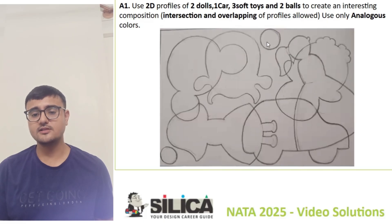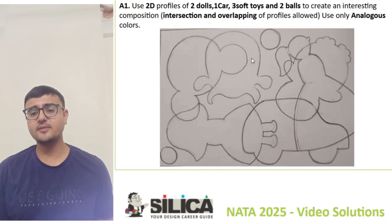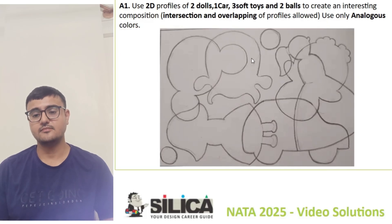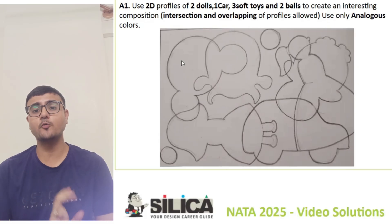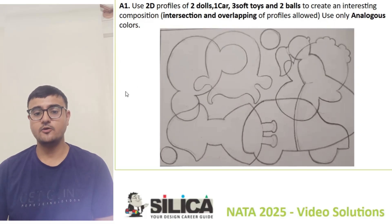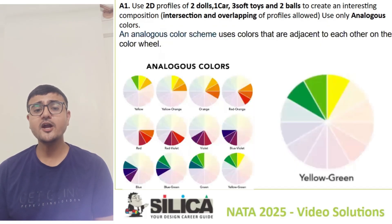And two balls, which are separate from each other to highlight them. This is the basic 2D composition using intersection and overlapping. Now let's talk about the coloring part.